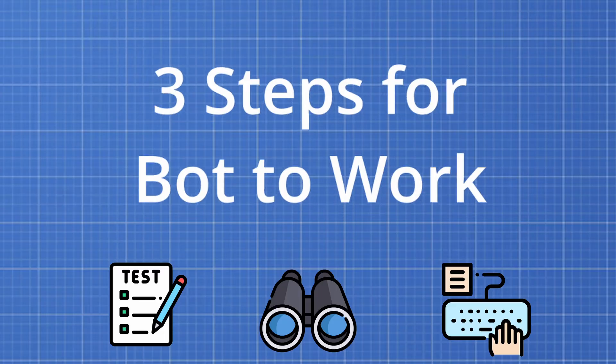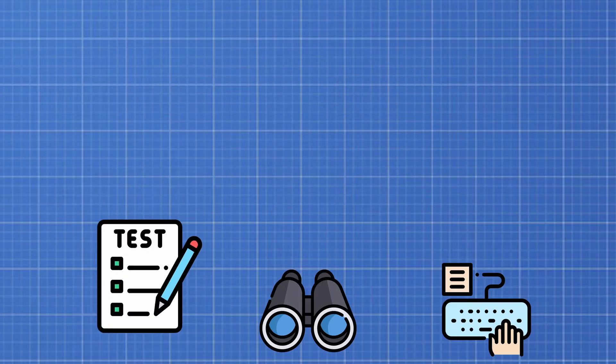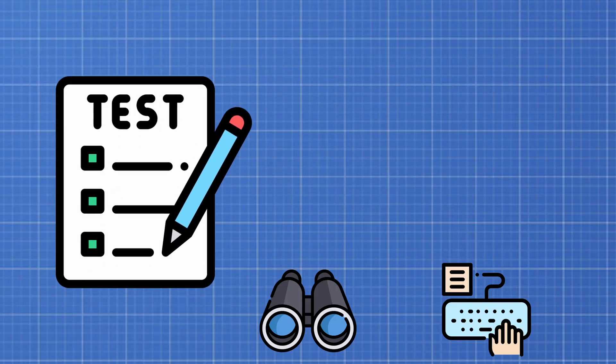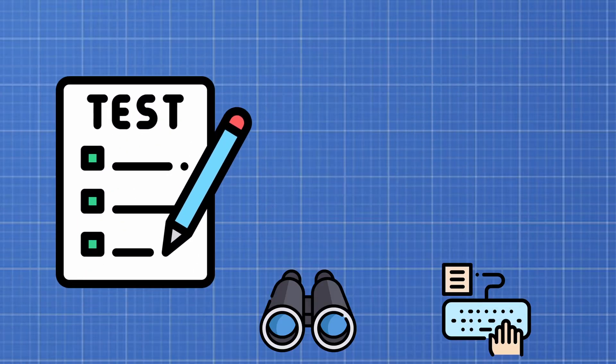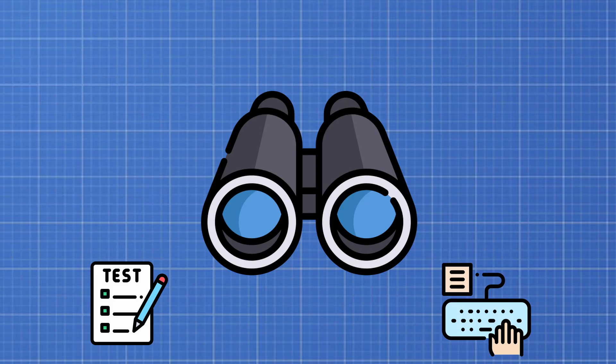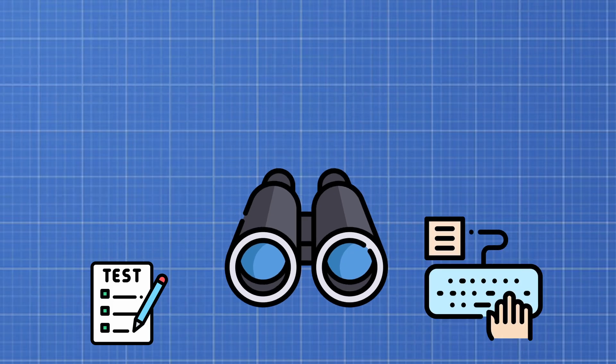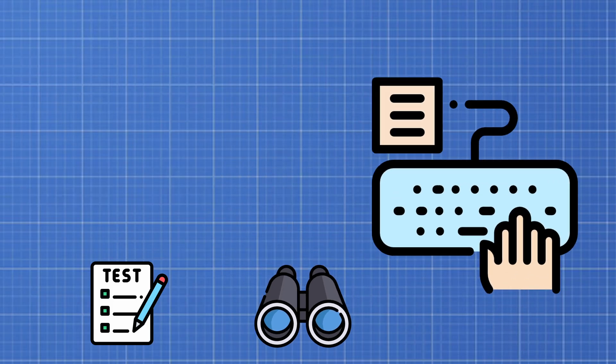There are three main things I need to accomplish with this bot. First, I need a test environment where I can play unlimited games. Second, I need my bot to be able to see and process the board. And third, I need it to be able to quickly type out its own guesses.